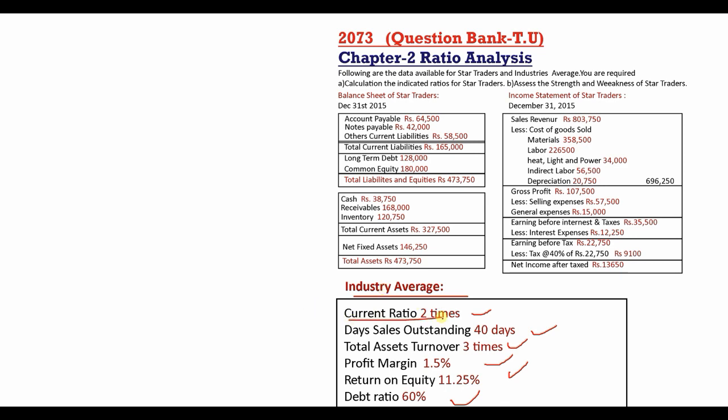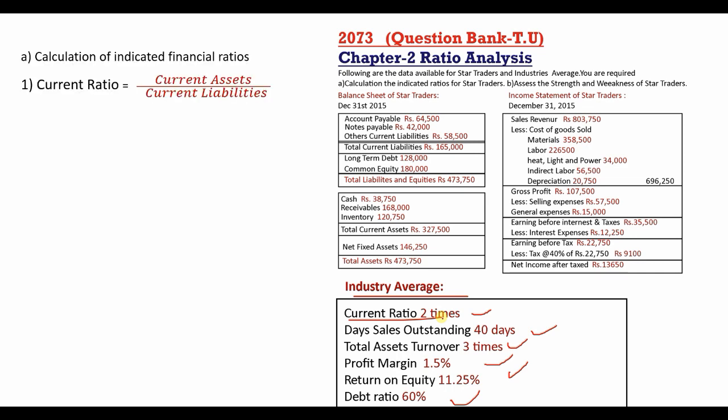Let's start with the current ratio. The industry average is 2.5 times. We will apply the formula: current assets divided by current liabilities.